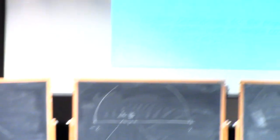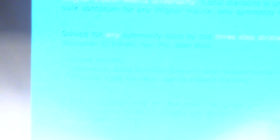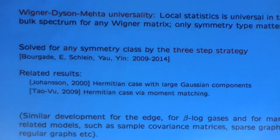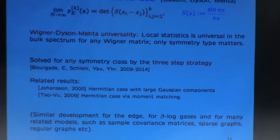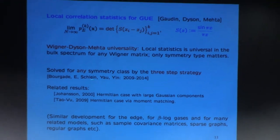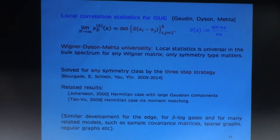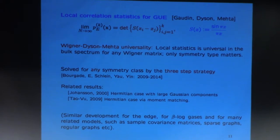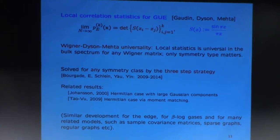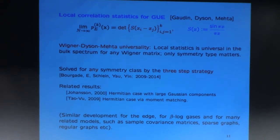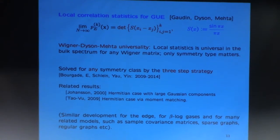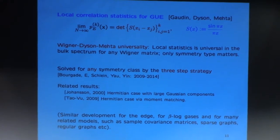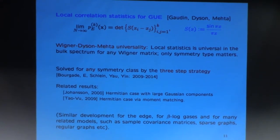That's the famous Wigner-Dyson universality, and it has been recently solved over several years by a strategy which we call the three-step strategy, which I will explain in more detail. This was done for both symmetric classes, the real symmetric and the complex Hermitian case.